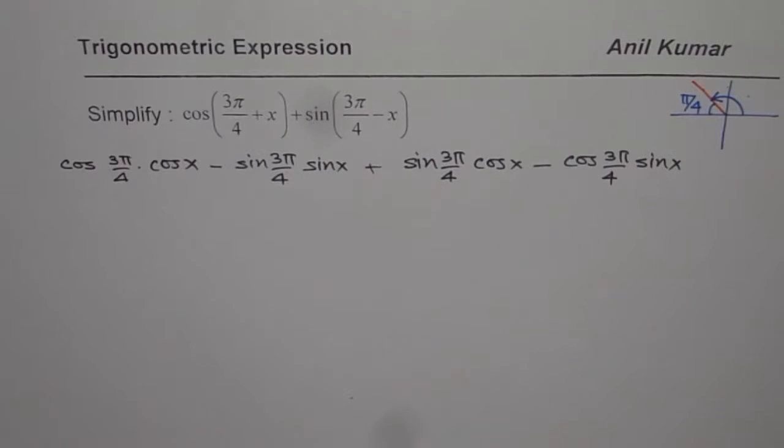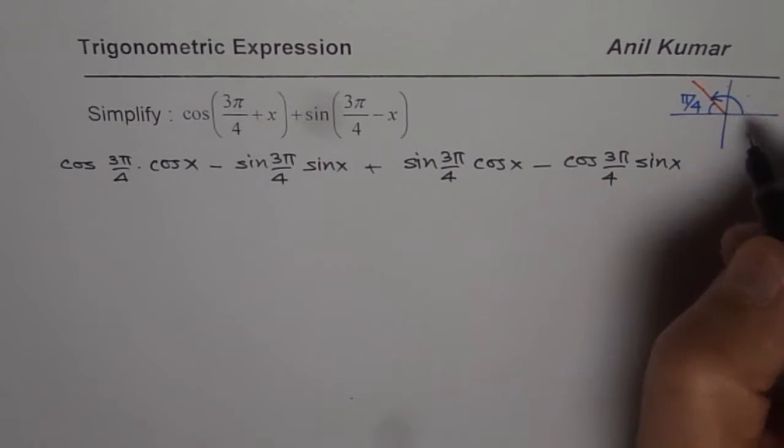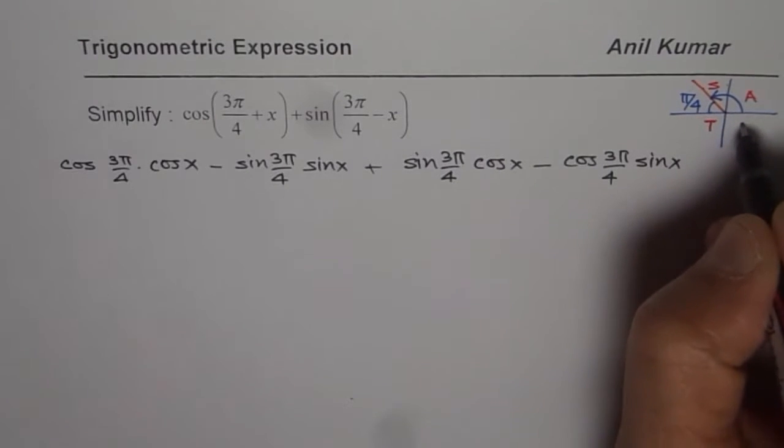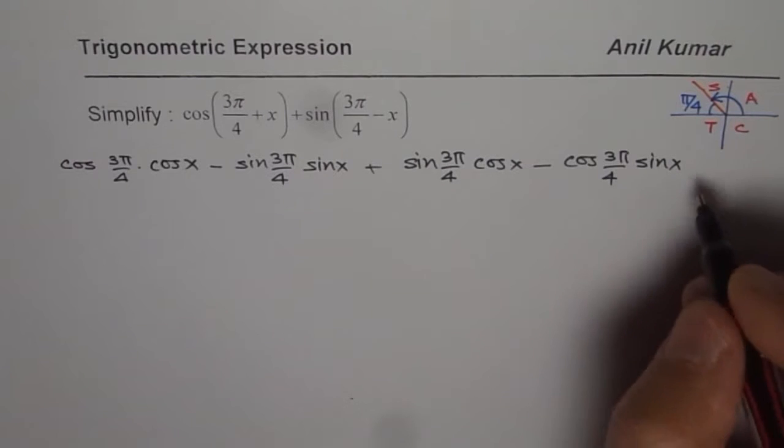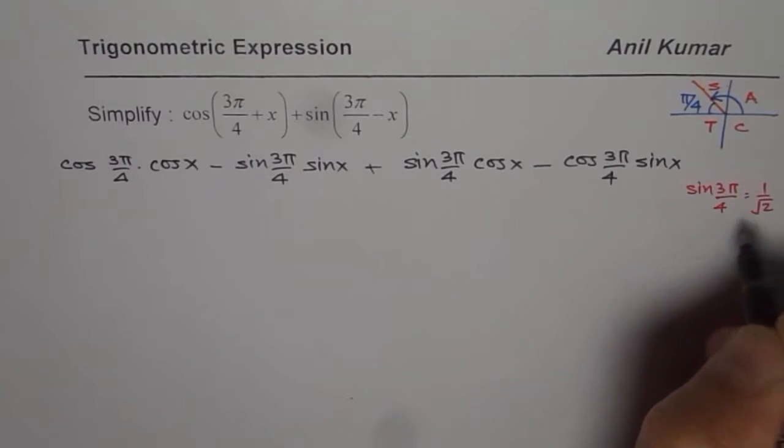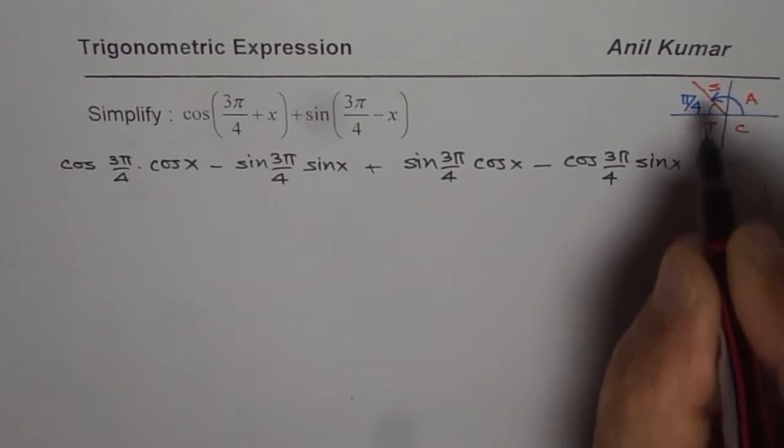Now here you know that all are positive in quadrant 1, sine in quadrant 2, tan in 3, and cosine is positive in quadrant 4. So that means that sin(3π/4) is equal to 1/√2, whereas cos(3π/4) is equal to -1/√2 since it is negative.